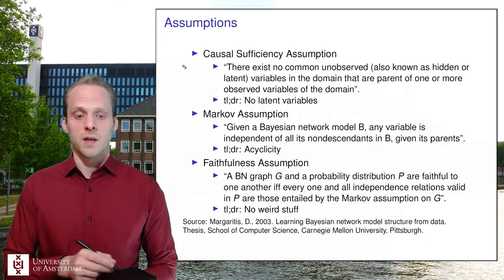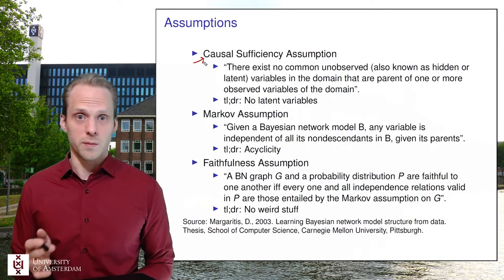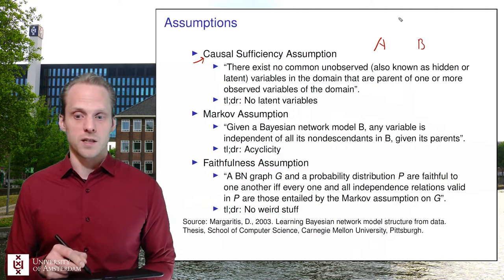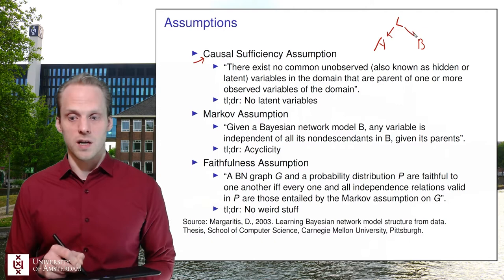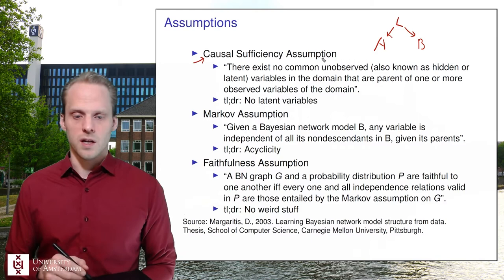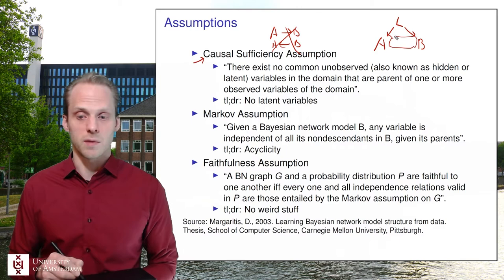The first assumption is the causal sufficiency assumption: there exist no common unobserved variables in a domain that are a parent of one or more observed variables — in short, there are no latent variables. If I have variable A and variable B, and a latent variable L causes both, then A and B are correlated and can only be independent after conditioning on L. But if we don't observe L, we can't condition on it, so we'd incorrectly get something like A causes B — which is wrong because that correlation is explained by L.